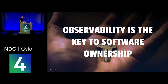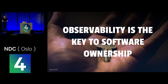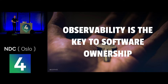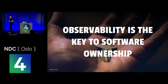When building software, software ownership is a key aspect. As a development team, we want to take ownership of building the application from initial idea to having it in production. Because as developers, we are the only people who know what the application is doing and what might go wrong. So giving this to IT operations is really not the best solution. I think observability can really help us in enabling us to take this ownership.